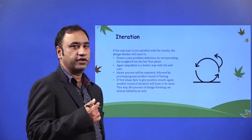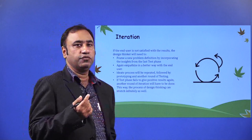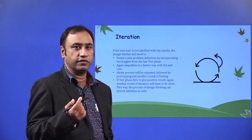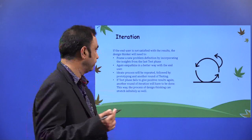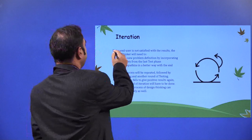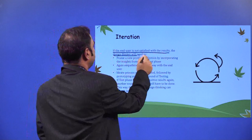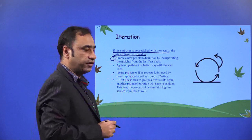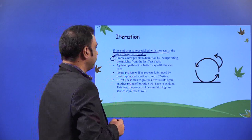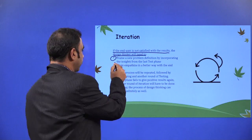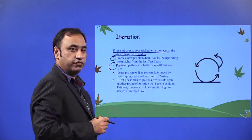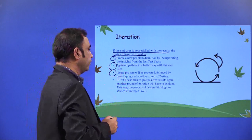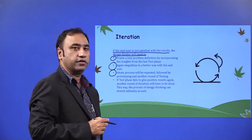Iteration. Once you have done the testing process you might need to go back and go for the iteration of the same process of design thinking again, based on the feedback that you have received from your users during the testing phase. If the end user is not satisfied with the results, the design thinker will need to frame a new problem definition by incorporating the insights from the last test phase. Then again emphasize in a better way with the end user, followed by the ideation process, prototyping, and another round of testing.